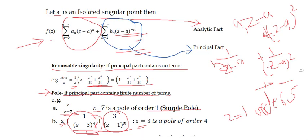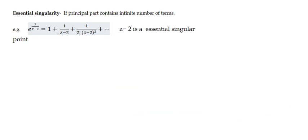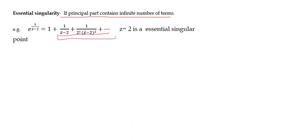The last type is essential singularity, which occurs when the principal part contains an infinite number of terms. For example, e^(1/(z-2)) = 1 + 1/(z-2) + 1/(2!(z-2)²) + ... and so on. The principal part in the Laurent series contains infinitely many terms, so z equal to 2 is an essential singular point. This completes the classification of singularities.